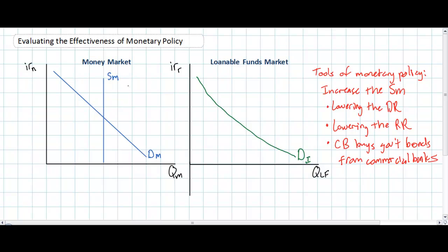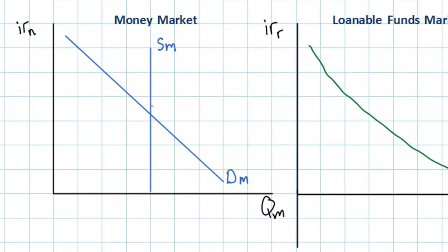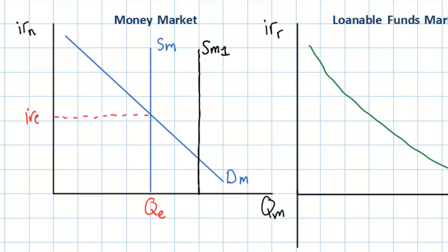Let's assume the economy is in recession and the central bank engages in an open market purchase of government bonds. In our money market diagram on the left, we start with an equilibrium interest rate of IRE and an equilibrium quantity of money demanded of QE. If the central bank increases the supply of money through an open market purchase, the money supply shifts to the right to SM1. This increase in reserves in the banking system causes the equilibrium interest rate to fall to IR1 and the quantity of money demanded to increase to QM1.